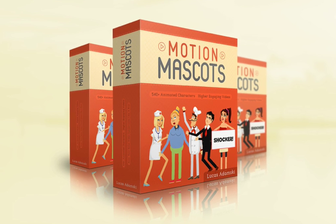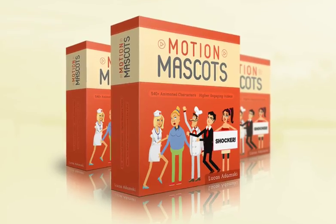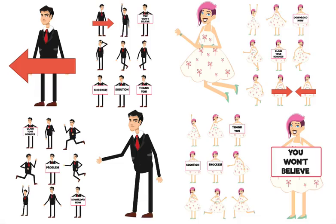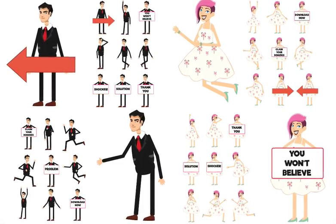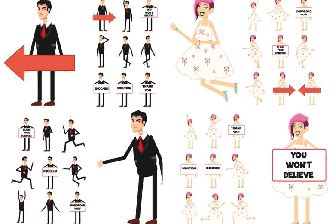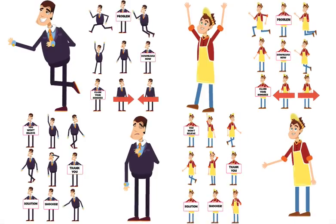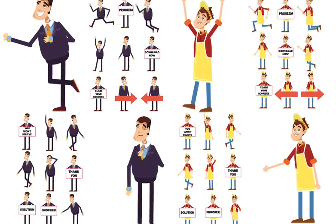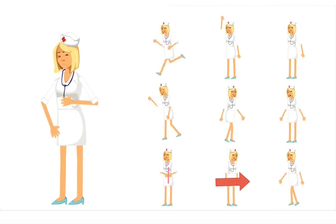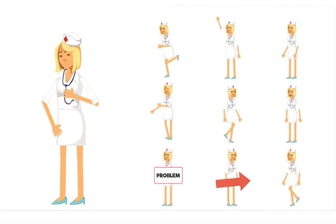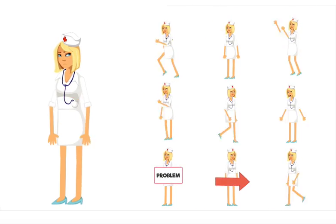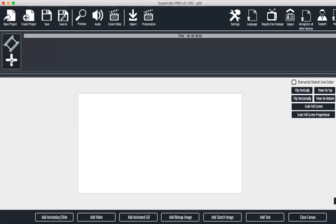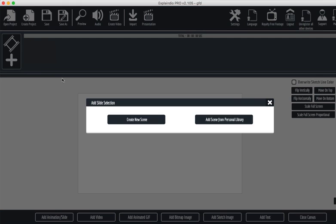Presenting Motion Mascots — get 540-plus detail-rich animated characters so you can start making more engaging videos in minutes, all for dirt cheap. And it's so simple to use.